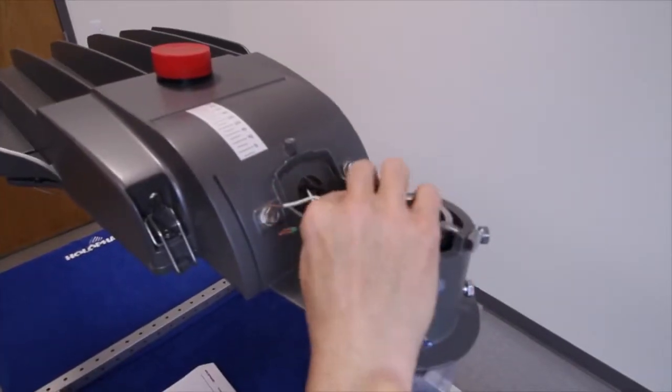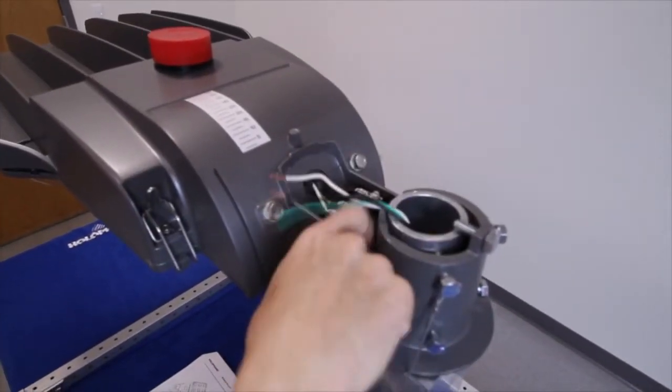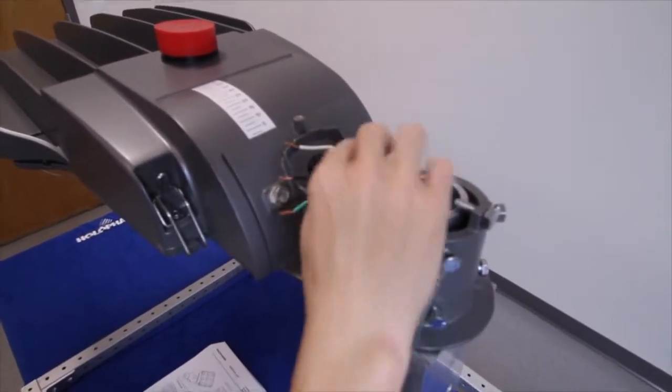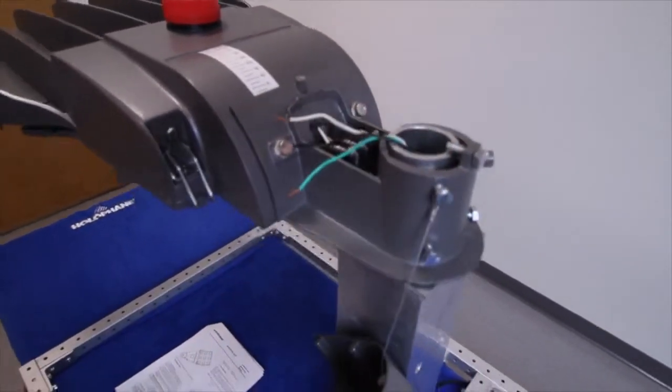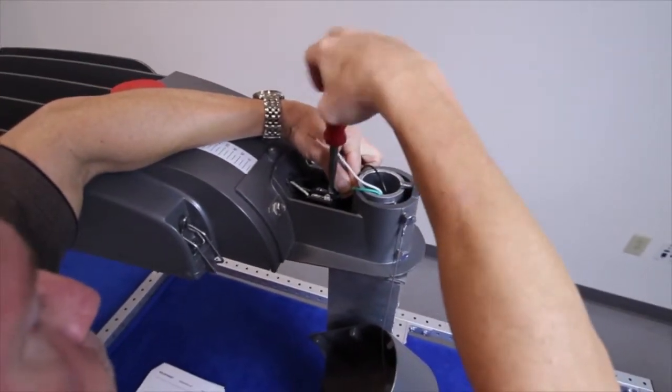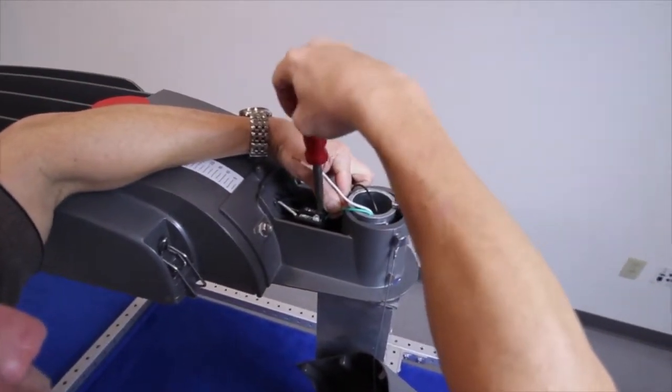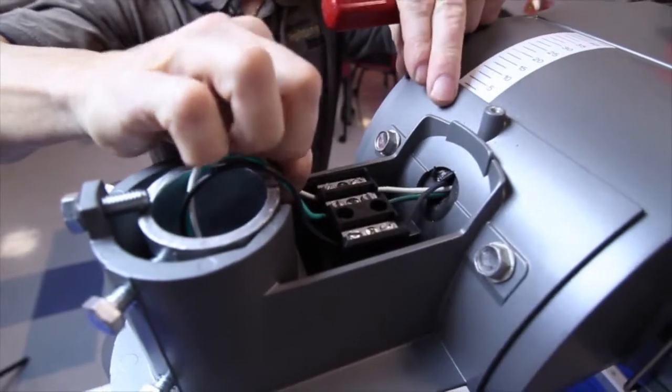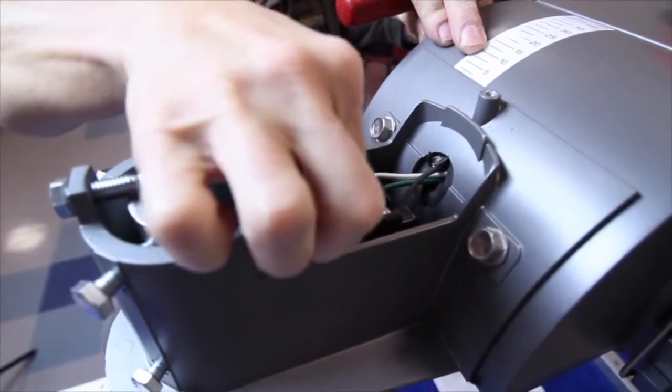Now you're ready to wire the luminaire. First, make sure none of the wires are pinched inside the wiring chamber. Connect the three color-coded wires to the terminal block. Check each wire to make sure it's snug by pulling on each lead.